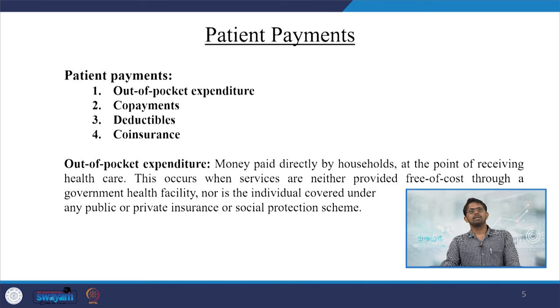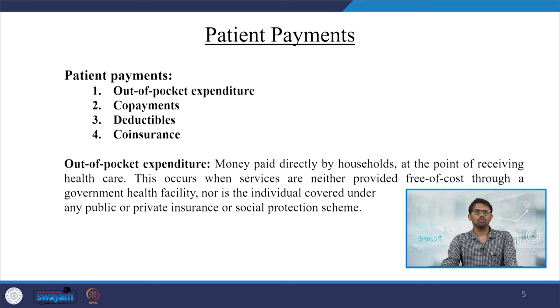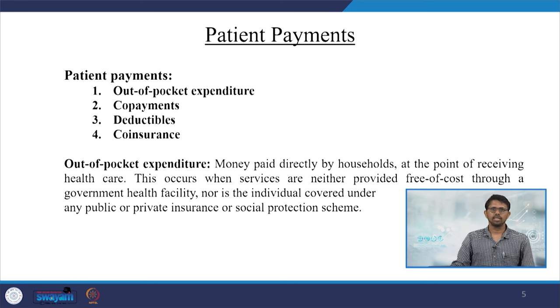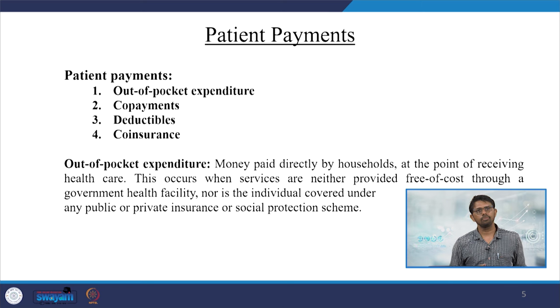There are broadly four different types of patient payments: one is called out-of-pocket expenditure, another is called co-payments, the third is called deductibles, and the fourth is called co-insurance.